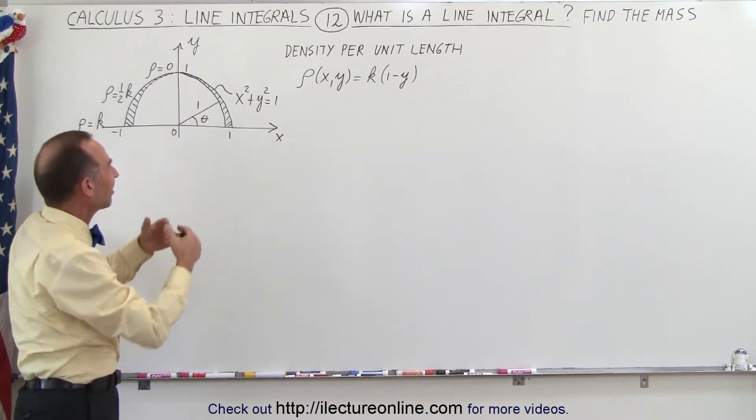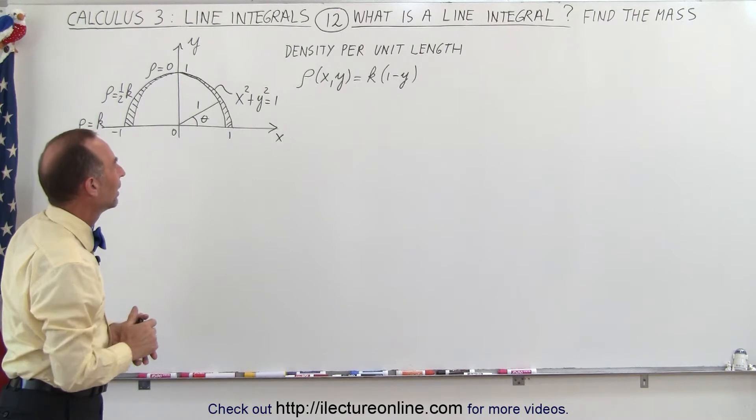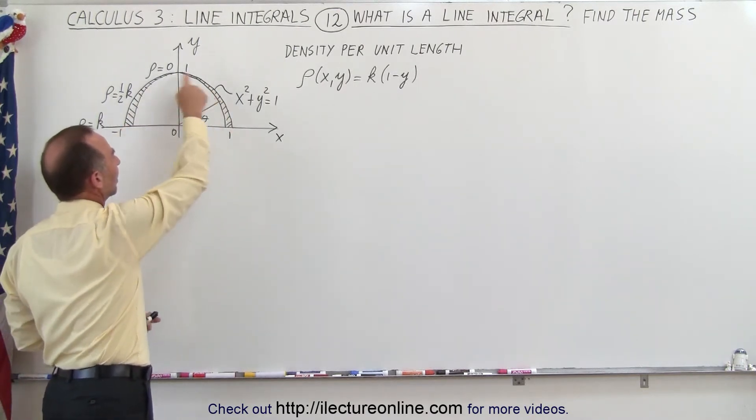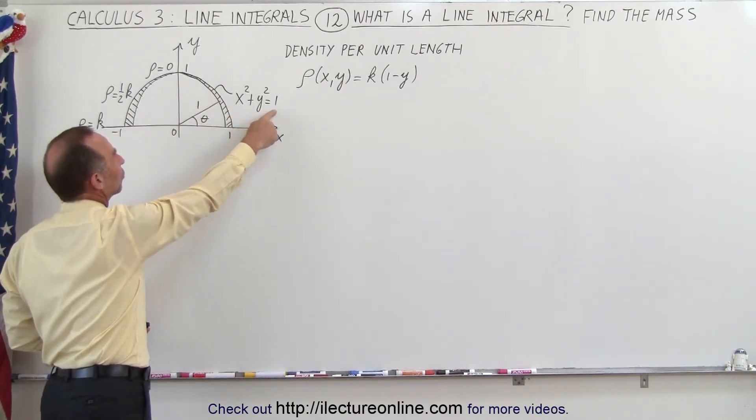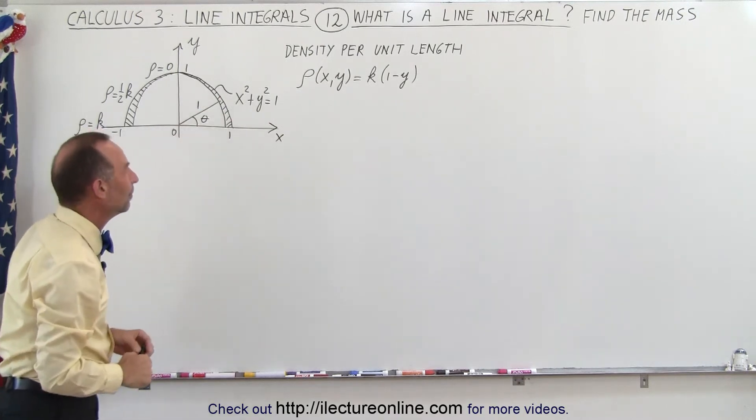Well, that's not really realistic, but let's say it's very close to 0. Of course, the equation of a semicircle like that is x squared plus y squared equals 1, because the radius of the wire is equal to 1.